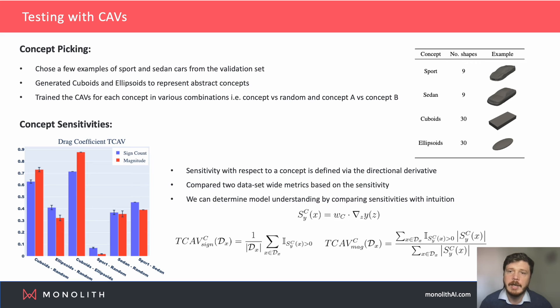We collected a few examples of sport and sedan cars to represent our concepts. We also wanted to see if we could use out-of-distribution synthetic shapes as a way of representing abstract concepts, such as more cubic or streamlined cars. We then used these collections in various combinations to train multiple CAVs.